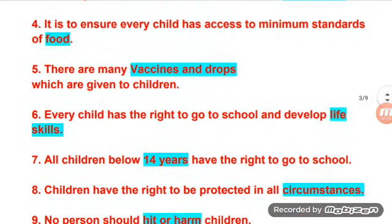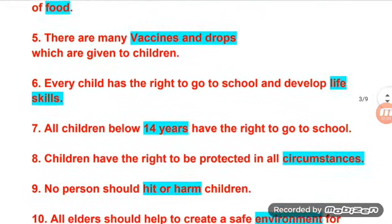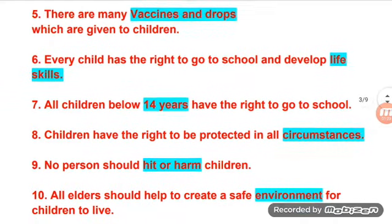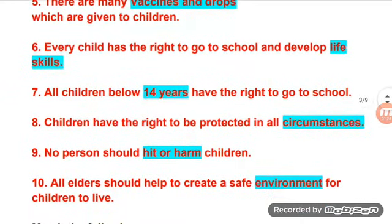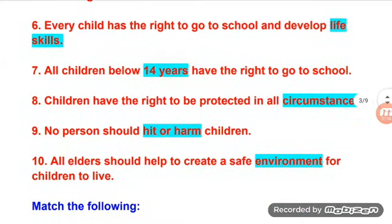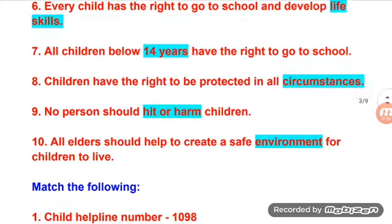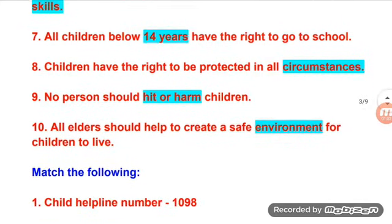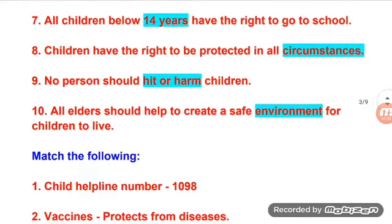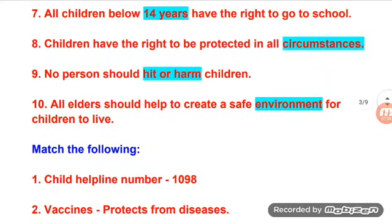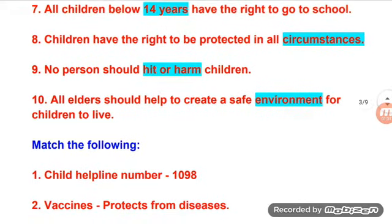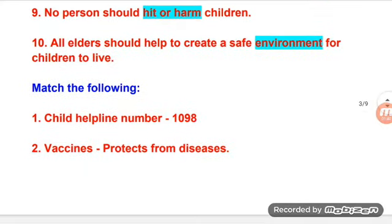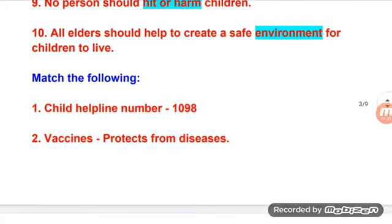There are many vaccines and drops which are given to children. Every child has the right to go to school and develop life skills. All children below 14 years have the right to go to school. Children have the right to be protected in all circumstances. No person should hit or harm children. All elders should help to create a safe environment for children to live.